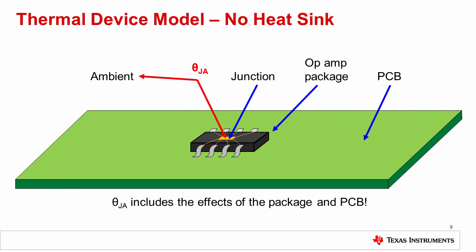Now that we understand how to calculate internal power dissipation for amplifier circuits at DC and AC, we are ready to use this information to calculate the internal junction temperature. This drawing shows the thermomechanical diagram of an amplifier soldered to a PCB without a heat sink. Remember that the die inside the plastic package is also called the junction, and the temperature of the die is called the junction temperature. The junction temperature is affected by the amplifier's power dissipation, as well as the ambient temperature, and can be calculated using the amplifier's thermal resistance. Thermal resistance is a property which describes how a material or object resists heat flow and is specified in units of degrees C per watt. A low thermal resistance is preferable because it will allow heat to flow out of the device and facilitate cooling of the device. The thermal resistance theta JA is the junction to ambient thermal resistance. This thermal resistance includes heat flow from the junction through the package into the ambient air and also into the local PCB.